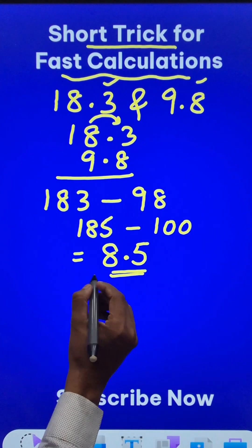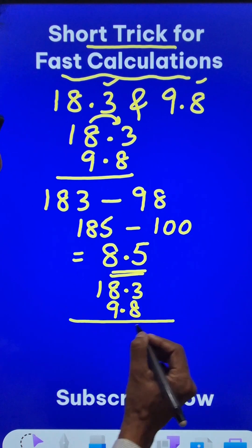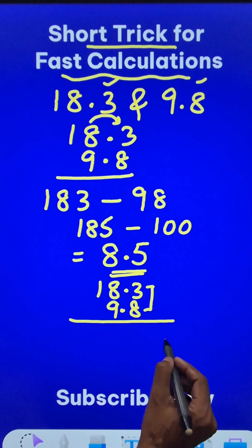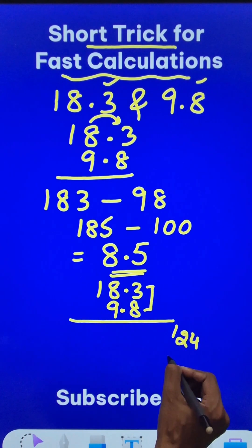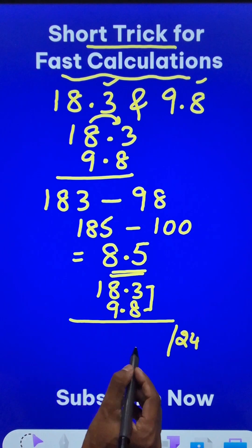Likewise, if you have to multiply 18.3 and 9.8, we can use the vertically and crosswise method. Multiply these two numbers, you get the number 24. Then cross multiply these two and these two. So 64 plus 27 is 91.